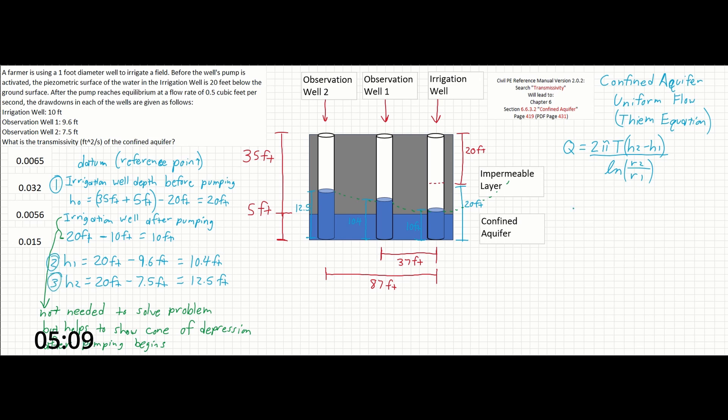Filling in our terms, we can see that Q equals 0.5 cubic feet per second equals 2 pi times T, which is what we're solving for. H2 will be 12.5, H1 is 10.4, over radius 2 equal to 87 feet, and radius 1 equal to 37 feet.